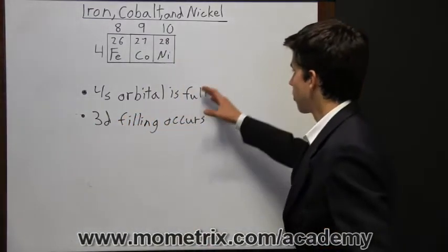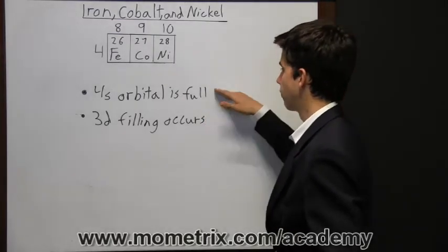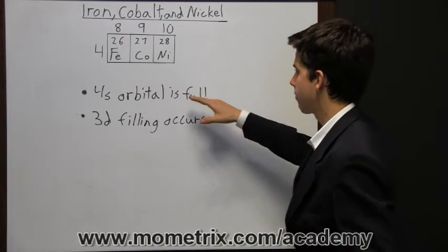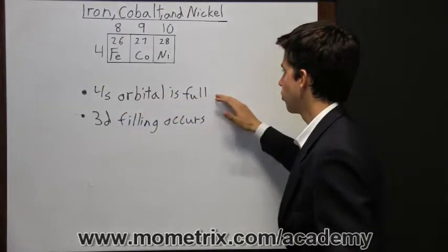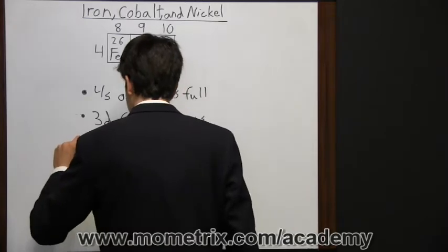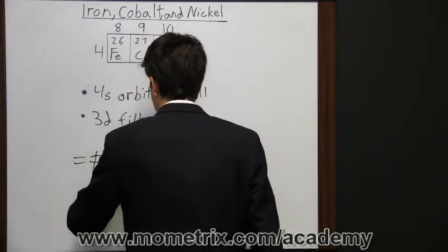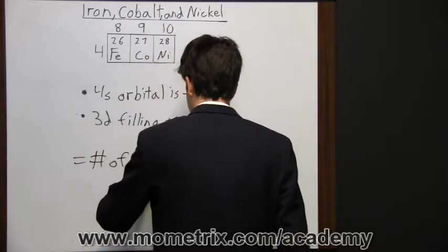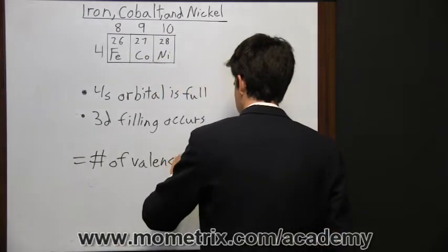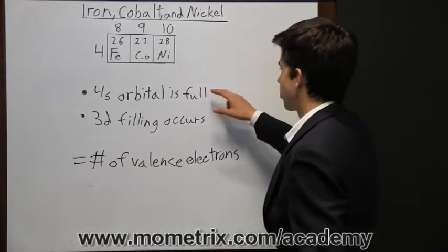The way this process works, the 3d won't start filling until the 4s orbital is full. So what that means is the 4s orbital is always going to be filled up, so there's going to be an equal number of valence electrons, and that makes sense.